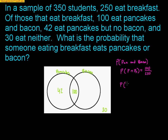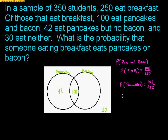The probability that somebody likes pancakes — that's the entire pancake circle — is 142. My spelling is terrible, but the probability that somebody likes pancakes is 142 out of 250. Some of those kids also like bacon, but if all I care about is pancakes, 142 out of 250 like pancakes.